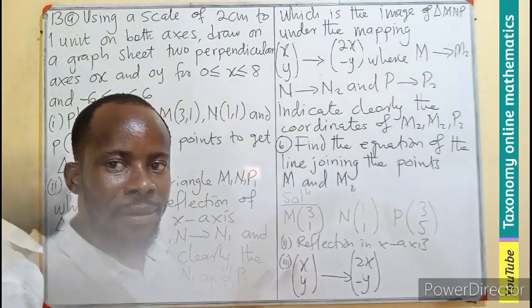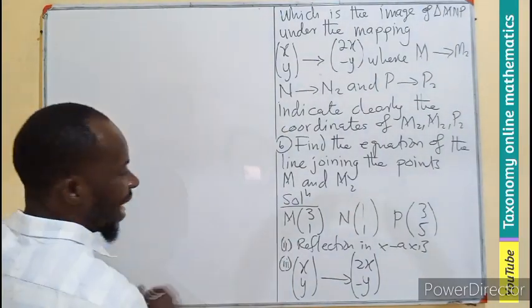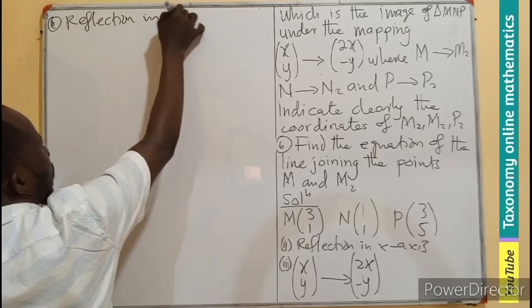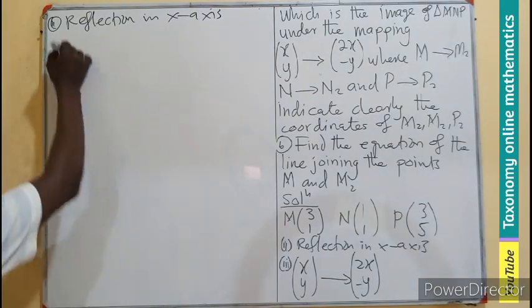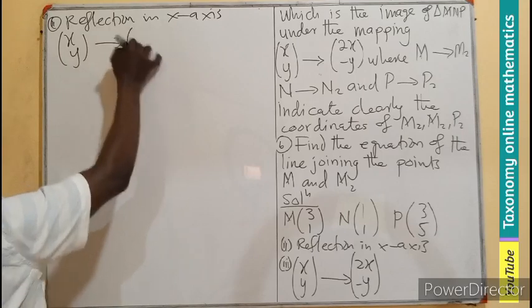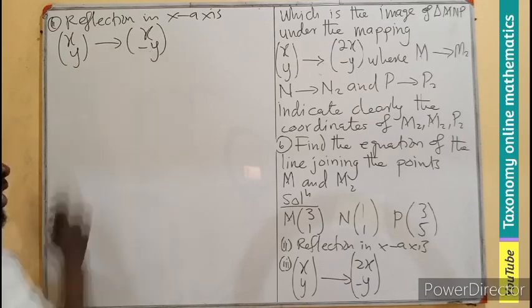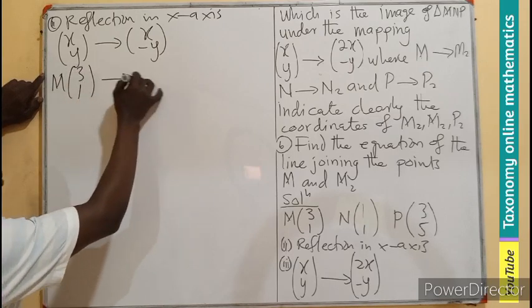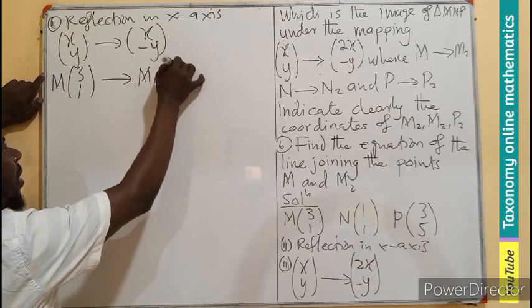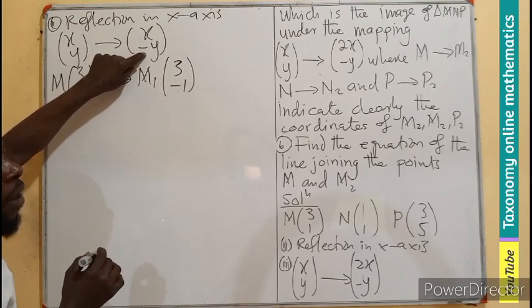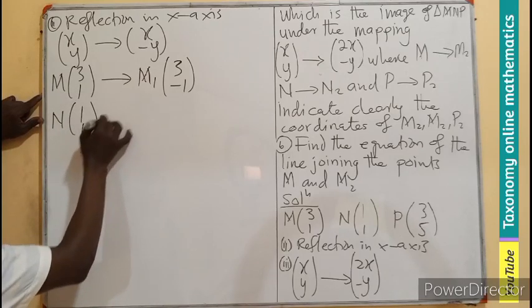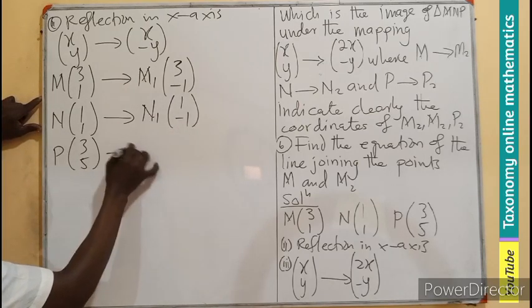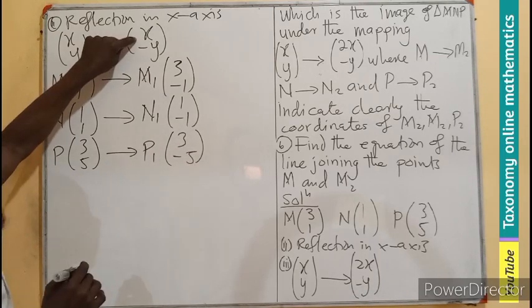So let's begin with the first one, reflection in the X axis. Your reflection in the X axis simply means that your mapping is going to be (X,Y) will be mapped onto (X, negative Y). The value of Y will be negative. So, picking the original, we are going to have M, which is (3,1), will now map to M1, which will be (3, negative 1). The X remains the same, Y is negative. The N(1,1) will also map to N1 as (1, negative 1). The P(3,5) will become P1 (3, negative 5), based on the mapping.